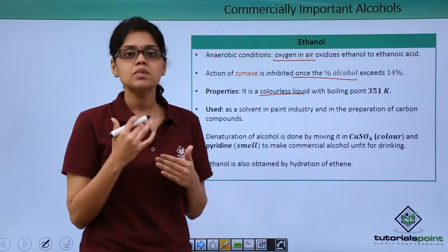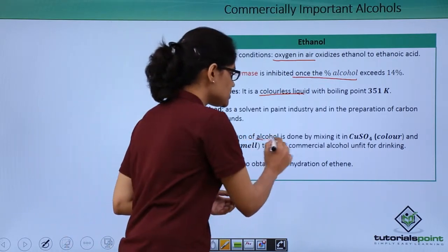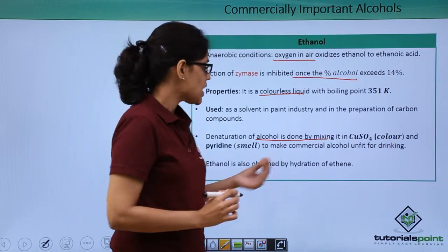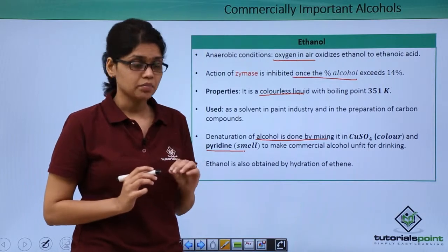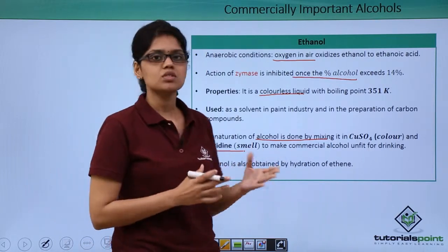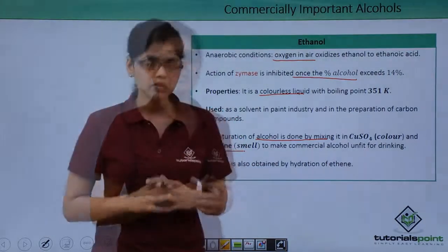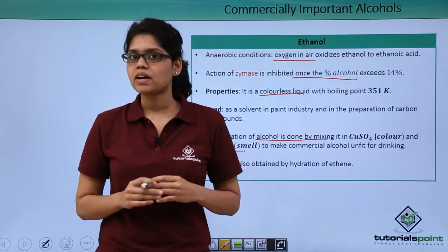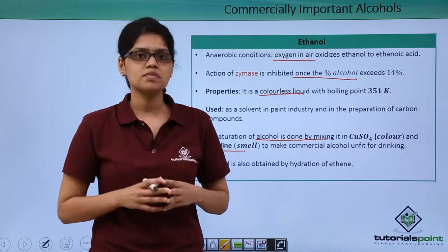In order to avoid any misuse of this alcohol, denaturation of alcohol is done by mixing it with copper sulphate, which gives it a blue color, and also by mixing it with pyridine, which gives it a distinct smell. Ethanol is also obtained by hydration of ethene as discussed in previous topics. I hope you are clear on the two commercially important alcohols — methanol and ethanol — their properties, applications, and modes of synthesis.